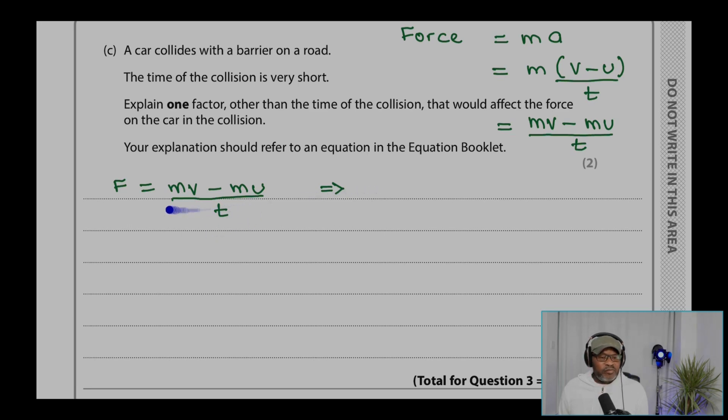And we can multiply both sides by T to get force times time equals changing momentum. The force times time is impulse, and that equals the changing momentum. And that's impulse equals changing momentum.